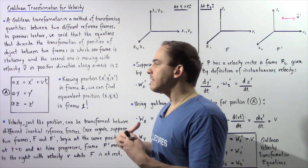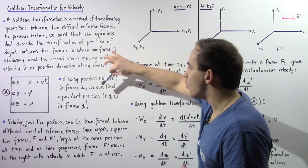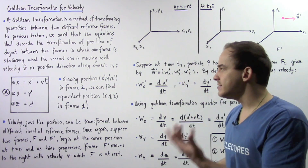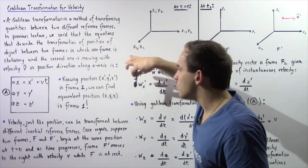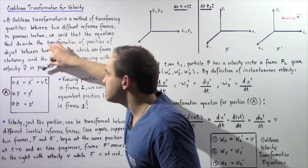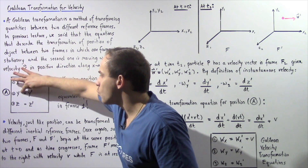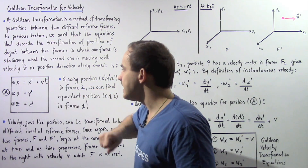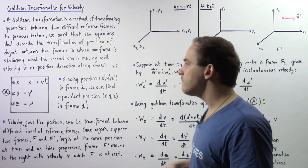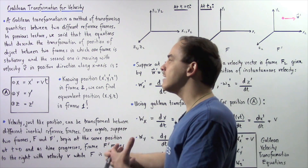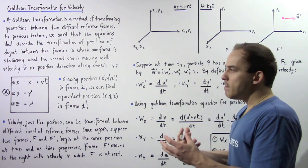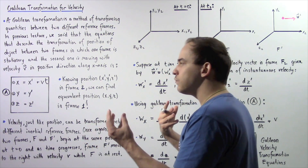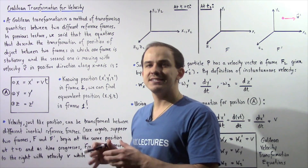Suppose frame 2 has coordinates x prime, y prime, and z prime, and frame 1 has coordinates x, y, and z. If we know x prime, y prime, and z prime, we can use these three equations to calculate x, y, and z. Specifically, x is given by x prime plus v times t, where v is the velocity of the second reference frame and t is the elapsed time. We assume that initially, before movement began, the two frames were at the same exact location.